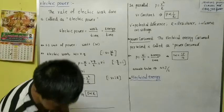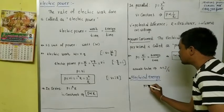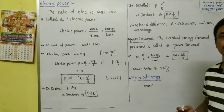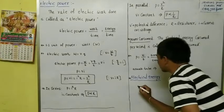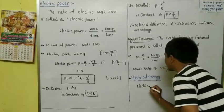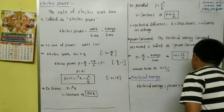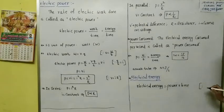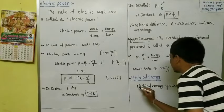To find the electrical energy consumed by a certain appliance: electrical energy equals electrical work. Using the power formula P = W/t, work equals energy. So we write power as energy by time. From this, energy is equal to power into time. The electrical energy formula is: Electrical energy = Power × Time.